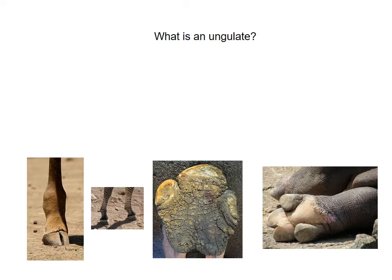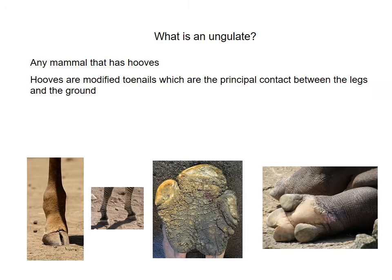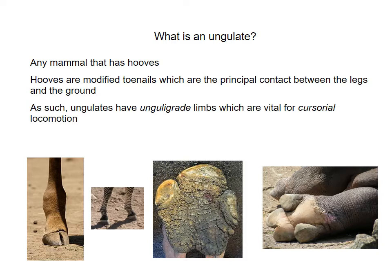To answer the first question — what is an ungulate? An ungulate is any mammal which has hooves, and these hooves are often modified toenails that are the main point of contact with the ground, between the animal and the ground. Because of this, ungulates have what we call unguligrade limbs, which are very important for cursorial locomotion, or fast running locomotion. Unguligrade limbs are the type of limbs found in animals that have at least five joints within them and are built for speed.